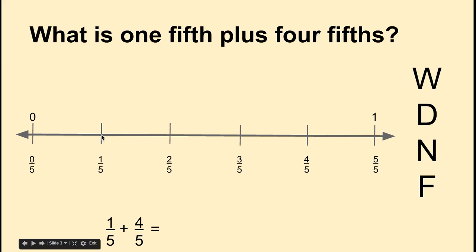Zero-fifths is equal to zero. Then we have one-fifth, two-fifths, three-fifths, four-fifths, and five-fifths, which is equal to one whole.